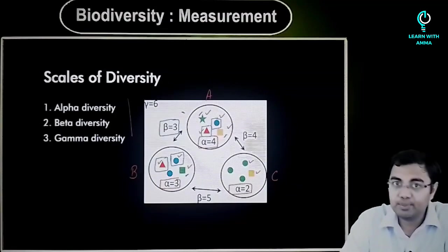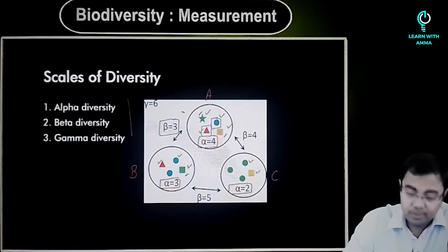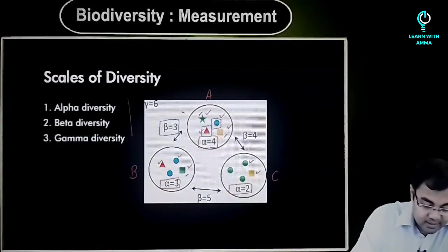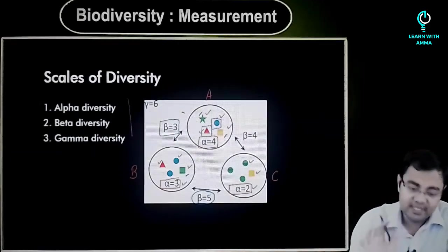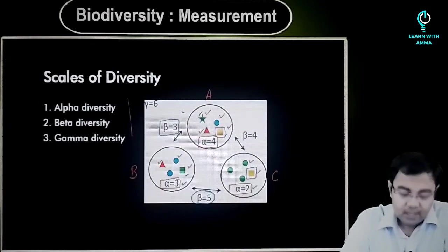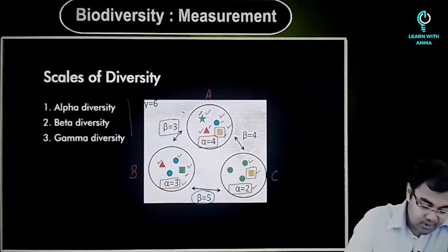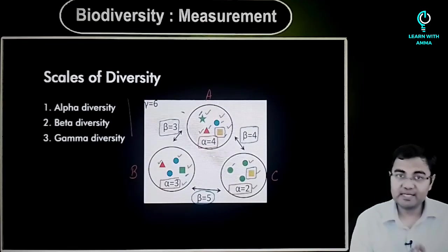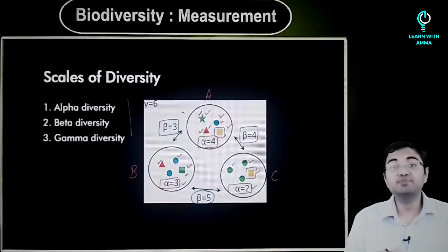Similarly, looking at sample B and sample C, you will see that there is nothing that is common. The three species in sample B and the two species in sample C have nothing in common, so the beta diversity will be counted as three from here and two from here — beta becomes five. If you look at the beta diversity between sample A and sample C, the yellow square is common in both, so we do not count it. We count the star, the triangle, the blue circle, and the green circle — so the beta diversity between A and C becomes four.